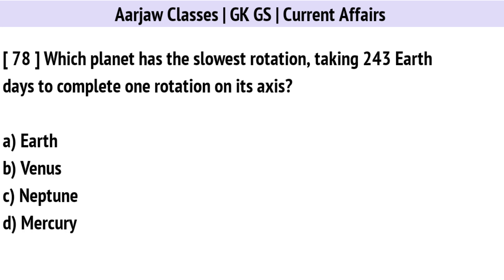Which planet has the slowest rotation, taking 243 Earth days to complete one rotation on its axis? Correct option is B: Venus.